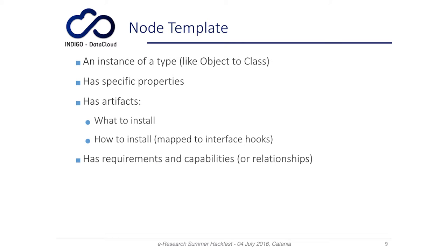A node template is an instance of a type — a similar relationship as an object to a class. It has its specific properties and artifacts that define what to install on that node and how to install it, mapped to interface hooks. Moreover, it has requirements, capabilities, and relationships.